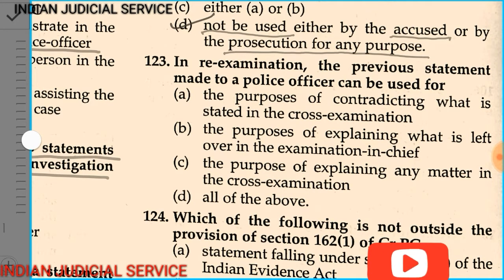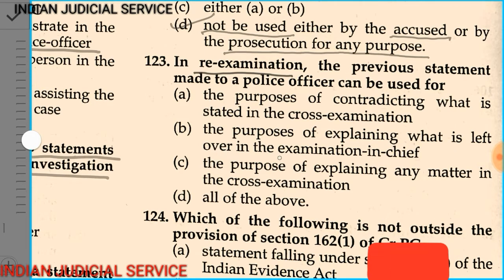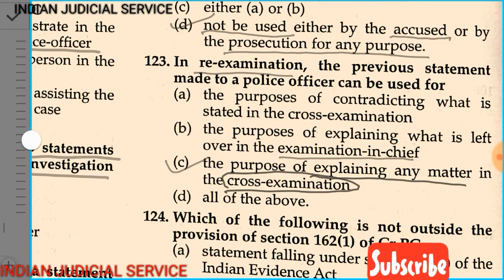Question number 123: In re-examination, the previous statement made to a police officer can be used for: Option A — the purpose of contradicting what is stated in the cross-examination; Option B — the purpose of explaining what is left over from the examination-in-chief; Option C — the purpose of explaining any matter in the cross-examination; Option D — all of the above. The answer is Option C. There are three types of examination: examination-in-chief, cross-examination, and re-examination.